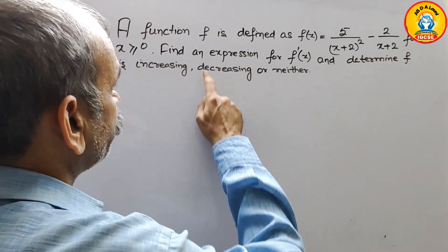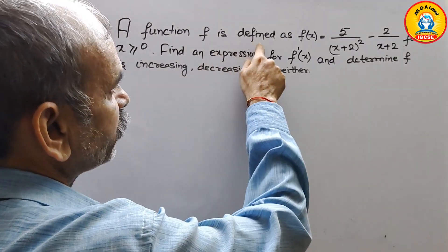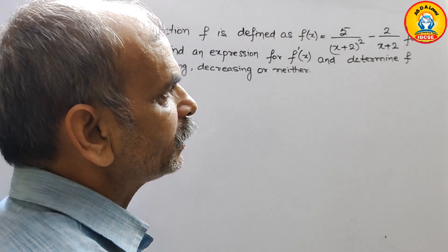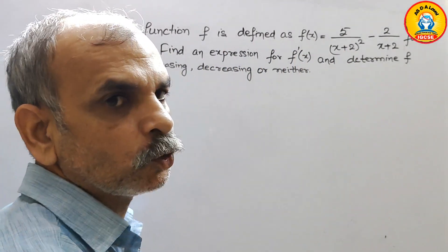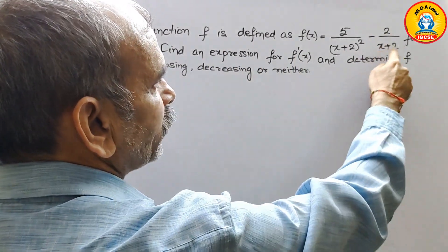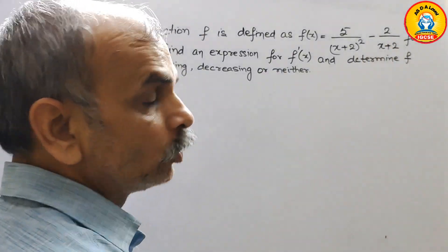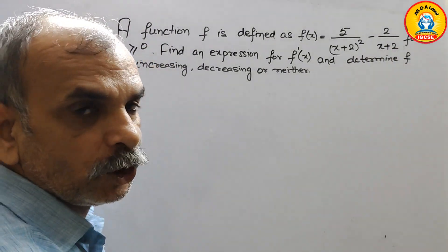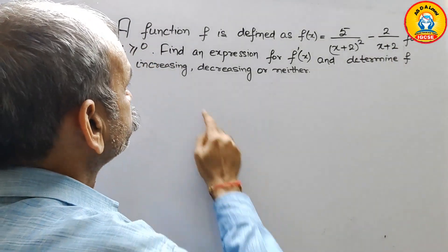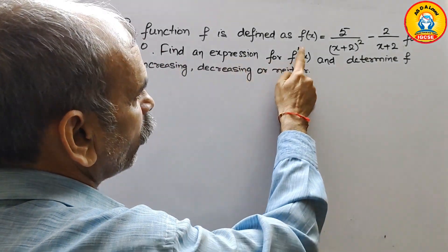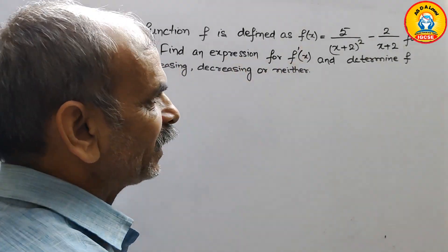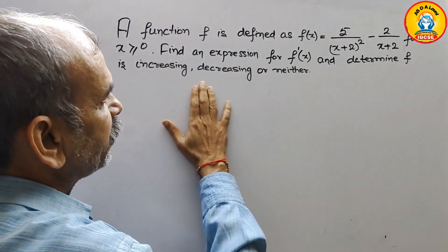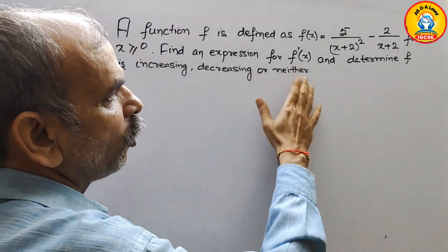The question is: a function f is defined as f(x) = 5/(x+2)² minus 2/(x+2) for x greater than or equal to 0. Find an expression for f'(x) and determine whether f is increasing, decreasing, or neither.